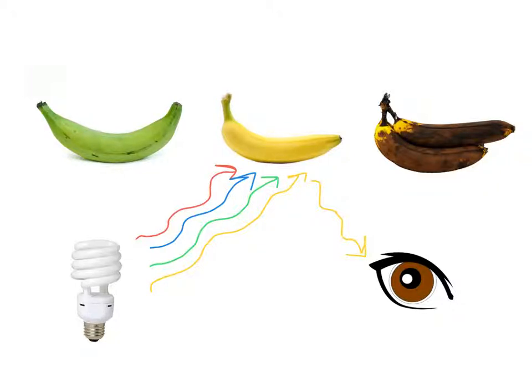You can tell that when it's not ripe, it's kind of this greenish color. When it's ripe, it's yellow. And when it's overripe, it's this kind of brownish black. All of that is due to the interaction of light with the specific molecules in the peel of the banana.